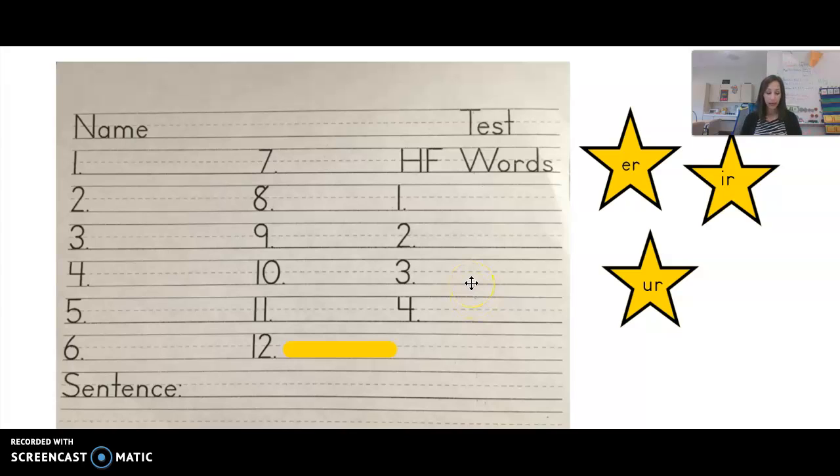Okay, number seven through twelve quickly. Seven is firm, eight is shirt, nine is dirt, ten is first, and then eleven and twelve going to the UR is fur and turn.